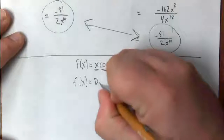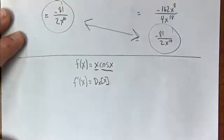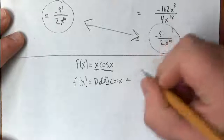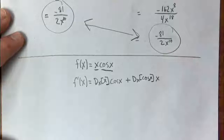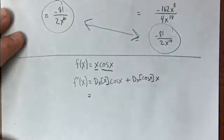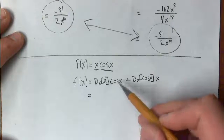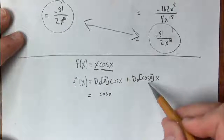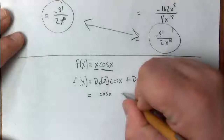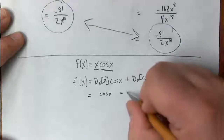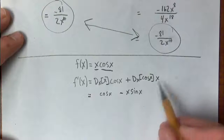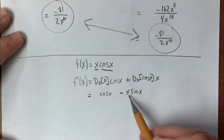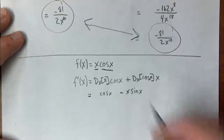The product rule says: take the derivative of your first function, which is x, and multiply it by your second function, cosine x. Then add the derivative of your second function, cosine x, times your first function, x. The derivative of x is just 1, so we get cosine x. The derivative of cosine is negative sine, so we get negative sine x times x, written as negative x sine x. So f prime of x equals cosine x minus x sine x.